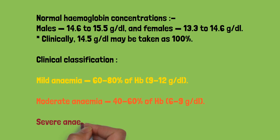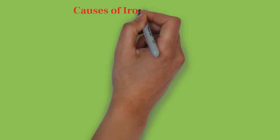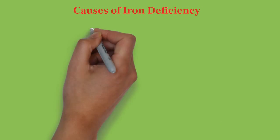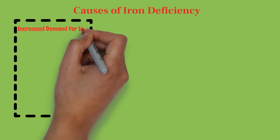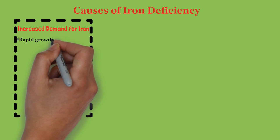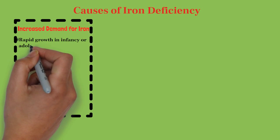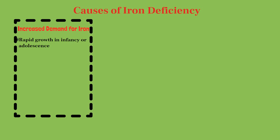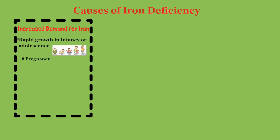Moving on, the conditions causing iron deficiency anemia are: number one, increased demand of iron; number two, increased iron loss; number three, decreased iron intake. Conditions where iron demand increases include rapid growth in infancy and adolescence, where rapid growth leads to increased iron demand causing iron deficiency anemia. Next is pregnancy, where there is increased demand of iron. In the last two trimesters, the daily iron requirement of a pregnant female is 5 to 6 mg per day. The last one is erythropoietin therapy, where iron demand increases causing iron deficiency anemia.